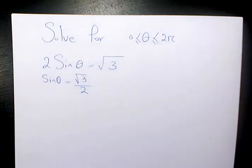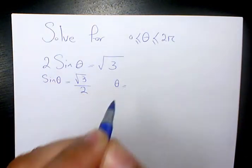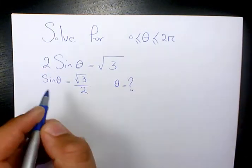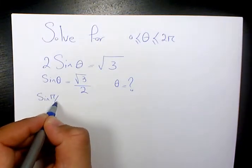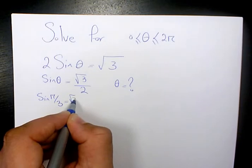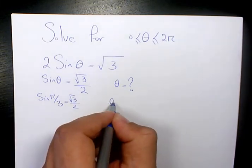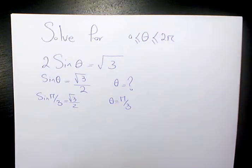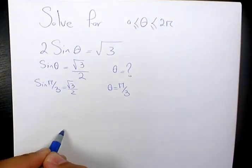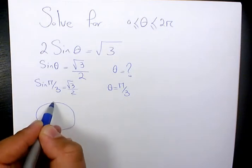So sine theta equals root 3 over 2. We need to find out what kind of theta value is going to be like that. We need to use special angles. We know sine π over 3 equals root 3 over 2, so one answer is going to be π over 3. What is going to be the other answer?